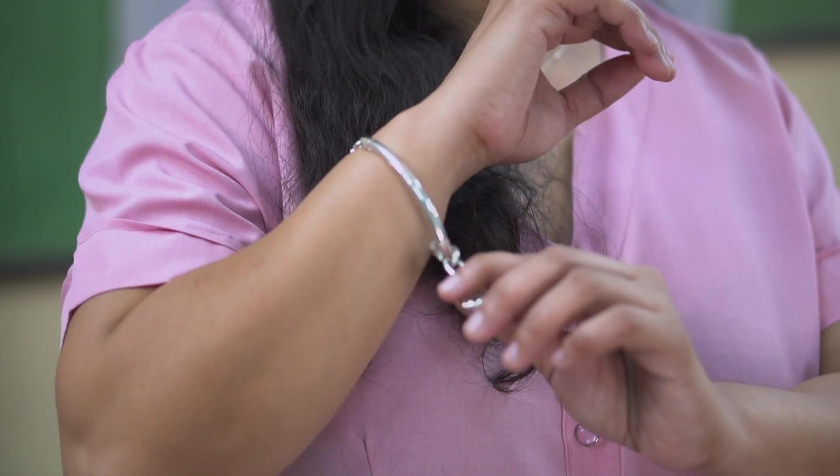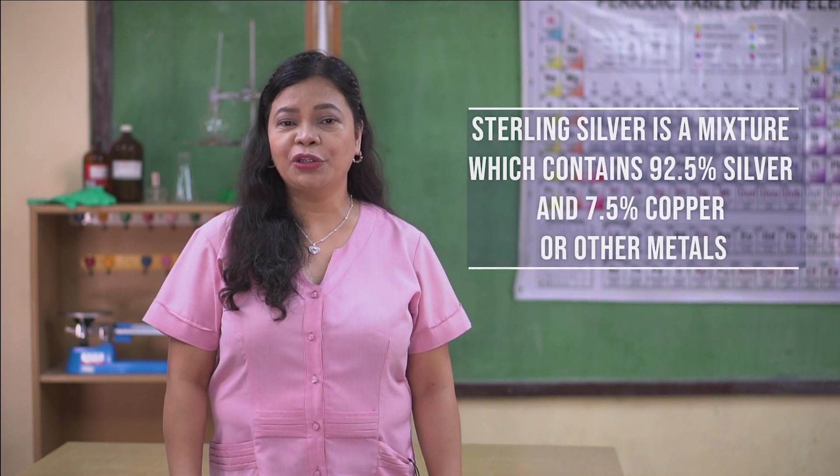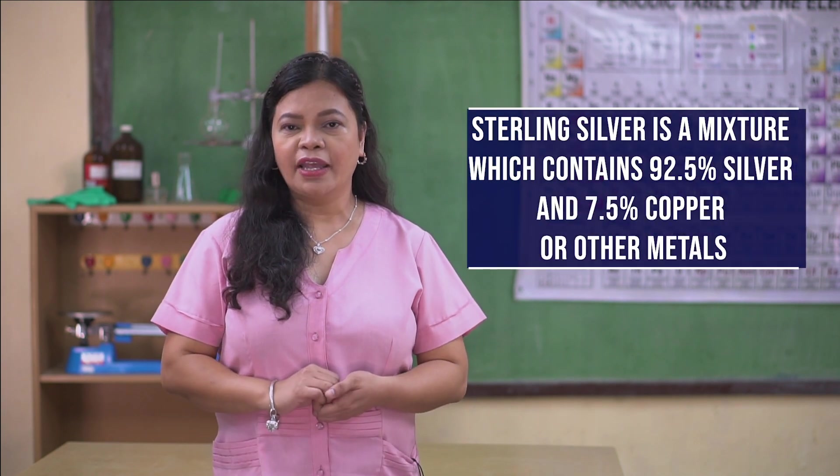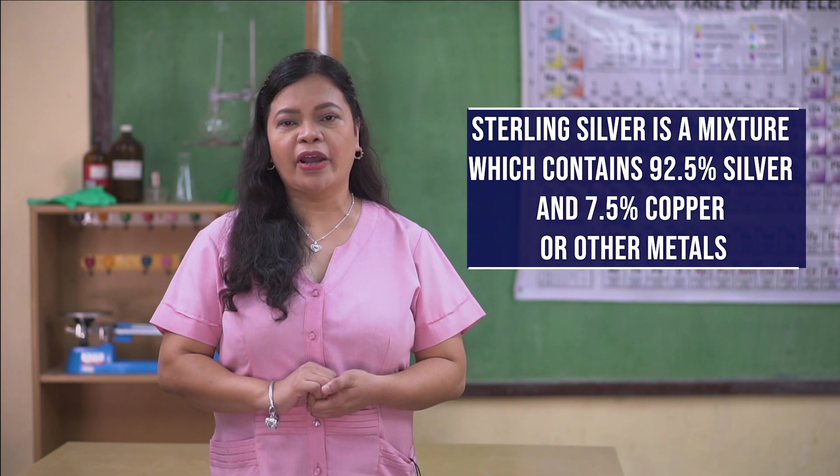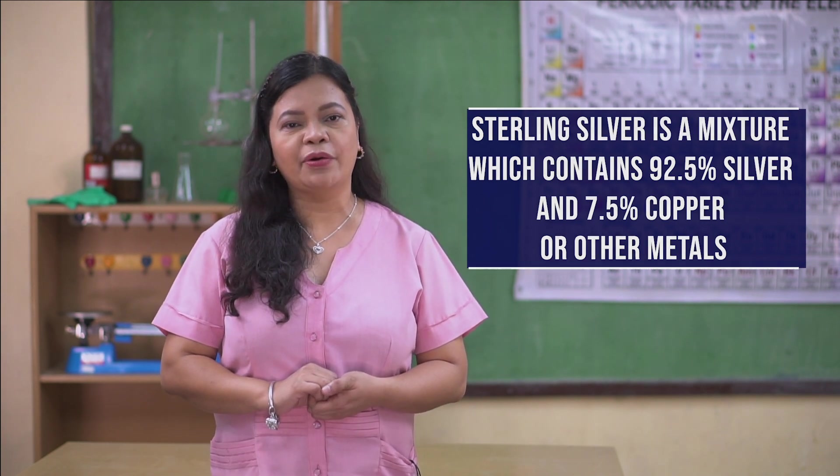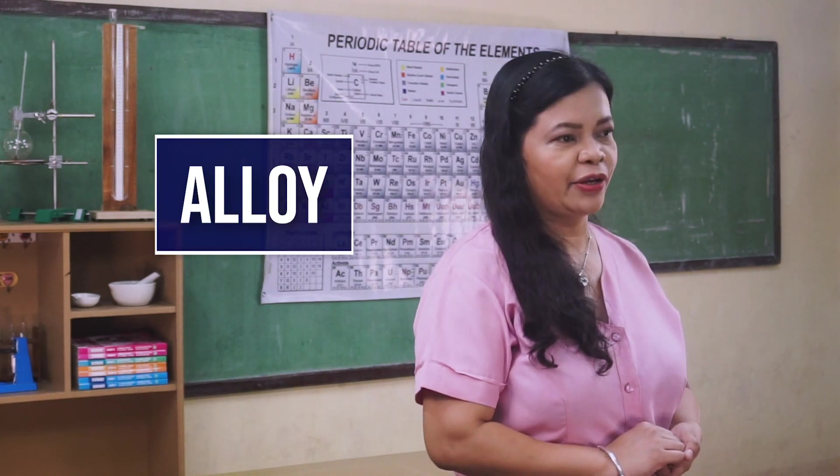One example of a material with percent by mass concentration is sterling silver, which is used in making jewelries and kitchen wares. It is a mixture which contains 92.5% silver and 7.5% copper or other metals. This kind of combination of metals is known as an alloy.